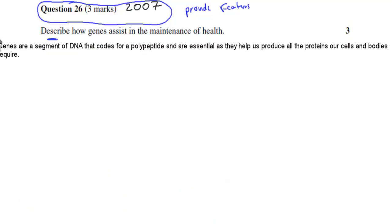I'll give you the sample answer. Genes are a segment of DNA that code for polypeptides and are essential as they help us produce all proteins our cell and bodies require. Here we talked about the function of proteins, which is important because that's the first step of figuring out why they're important.